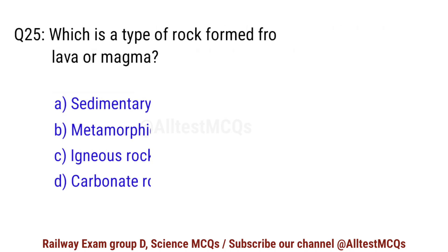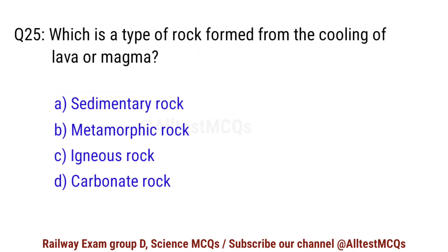Question No. 25. Which type of rock is formed from the cooling of lava or magma? Right option is C. Igneous rock.